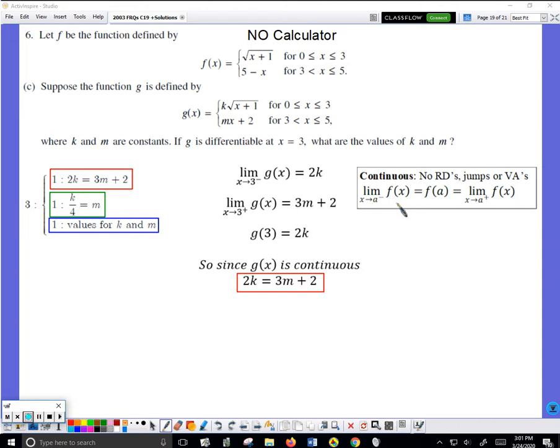So just like I did earlier, good notation. I find the limit as x approaches 3 from the left of g. So that's using this. Now x is a little less than 3, this will be less than 3 plus 1 is close to 4, square root of close to 4 will be close to 2. So this limit is 2k.